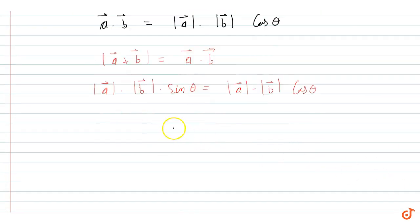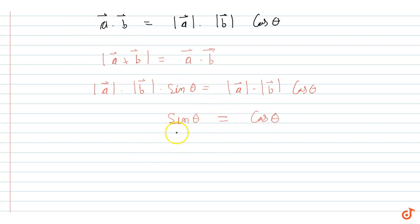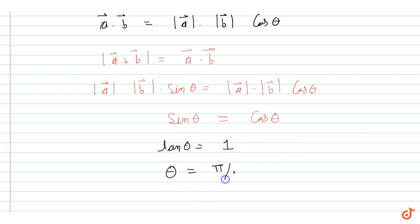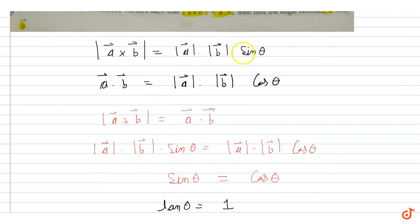Here, a vector and b vector cancel out on both sides. So what value can we say? Sin theta is equal to cos theta, which gives theta equal to pi by 4, because when sin equals cos, the angle is pi by 4.